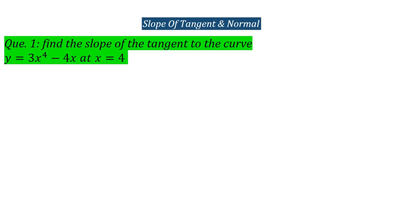The problem is: find the slope of the tangent to the curve y equal to 3x raised to 4 minus 4x, at x equal to 4.